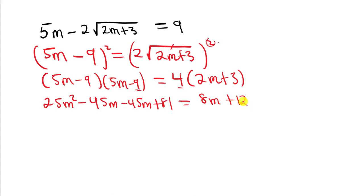Now we don't have any root sign in the equation. Because the highest exponent of m is 2, it means we are having a quadratic equation here, so we are going to rearrange it in the order of the general quadratic equation.